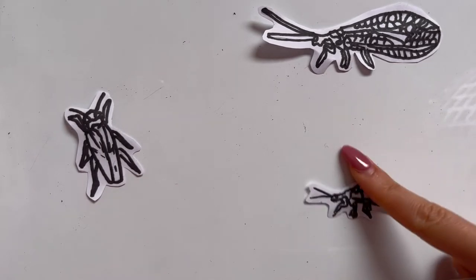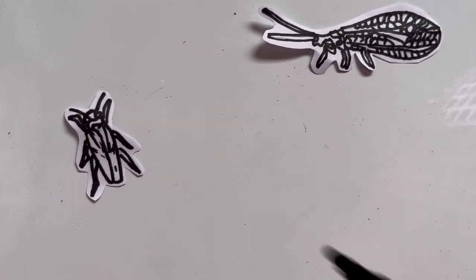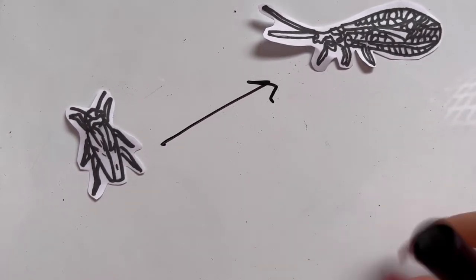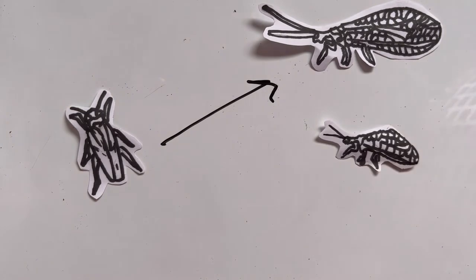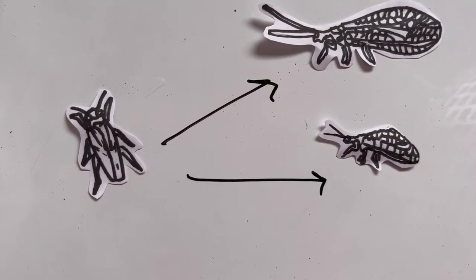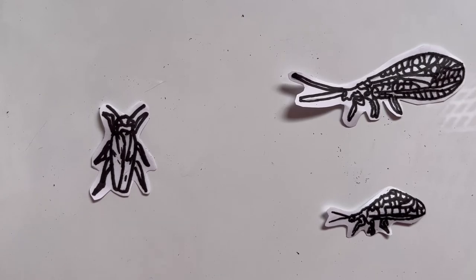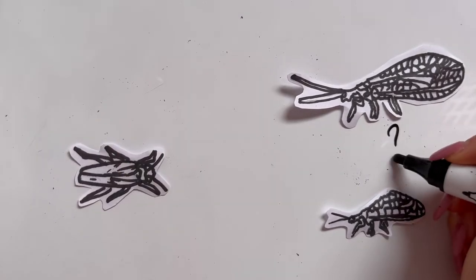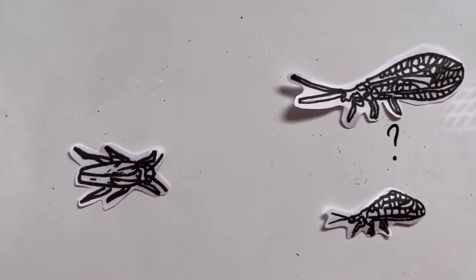This was done in the manner where only one predator and one prey were sampled at a time with each leafhopper being subjected to two different lacewing predators of different sizes to see if they could discriminate between different predators of the same species based on size differences in order to allocate energy efficiently.